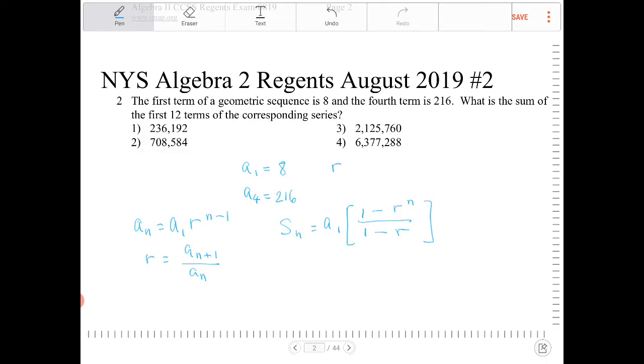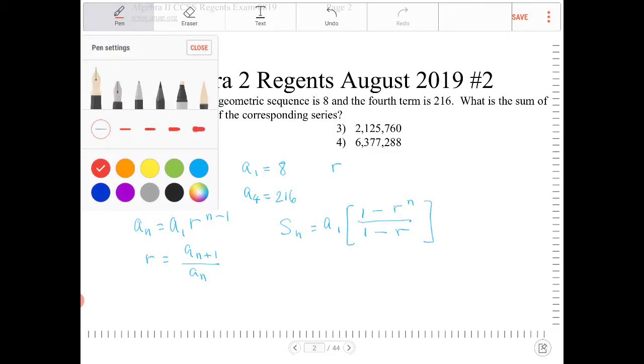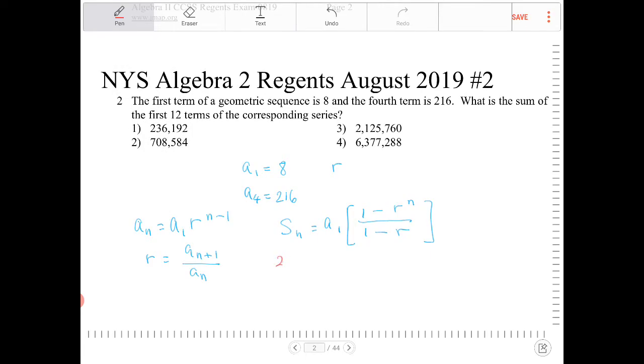So since I know A sub 4 is 216, I can then say, I'm going to use a different color now. I can then say 216 is equal to A sub 1, which is 8 times R, which is what I'm trying to find at the moment. And which term are we at when we're at 216? We're on the fourth term, 4 minus 1, right?